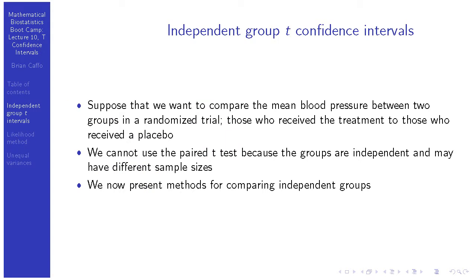Let me motivate the problem a little bit. Suppose that we want to compare the mean blood pressure between two groups in a randomized trial — those who received treatment to those who received placebo. Unlike last week, where people would have had to match, comparing the same person before and after receiving a treatment, these groups are entirely independent. We can't use the same procedure; we can't take pairwise differences between measurements. In fact, they might have different sample sizes in the two groups. So this lecture we're going to talk about ways for investigating the differences in the population means between groups when we have independent samples.